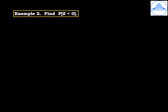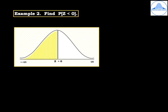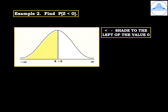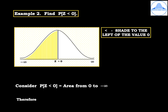Example 2: find probability of z less than 0. Draw the standard normal curve with center line z equal to 0 and extremities minus infinity and infinity. Because the sign is less than, shade to the left of the value 0 — from 0 to minus infinity. Since the total area under the normal curve is 1, the area from 0 to minus infinity is 0.5. Therefore probability of z less than 0 is 0.5.